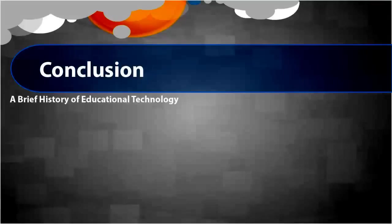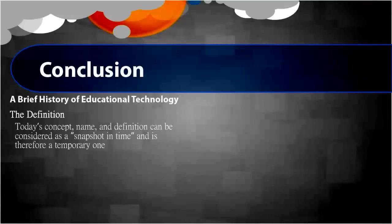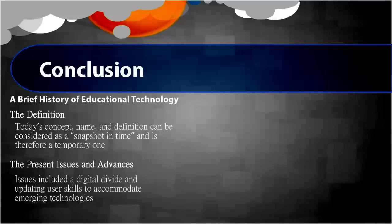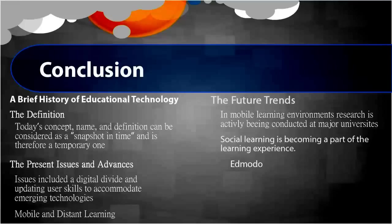To conclude the presentation, we learned a brief history of educational technology and the definition of educational technology. We learned that today's concept, name, and definition can be considered as a snapshot in time and is therefore a temporary one. For the present issues and advances, issues include a digital divide and updating user skills to accommodate emerging technologies. I introduced some of the hot topics in mobile and distance learning environments. For the future trends in mobile learning environments, major research universities are actively researching this learning experience. Social learning is becoming a part of the learning experience as well.